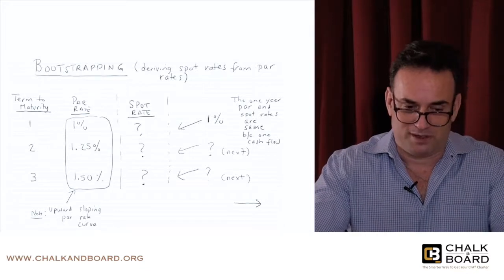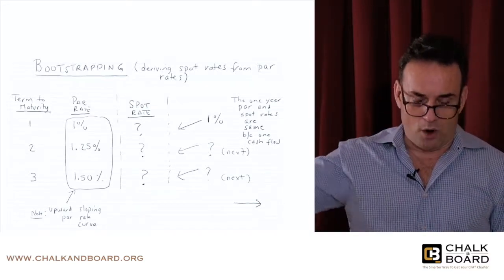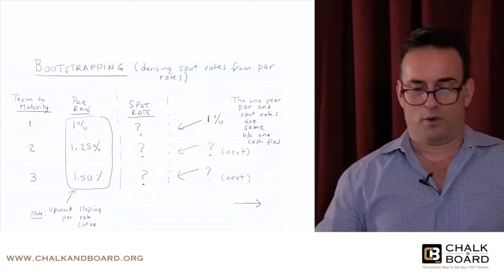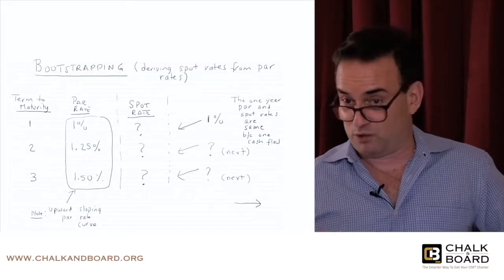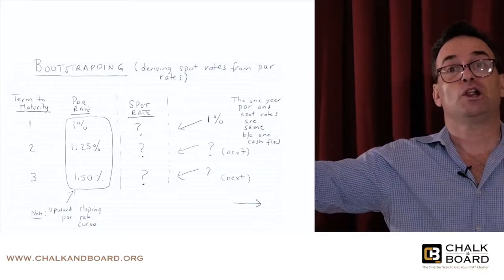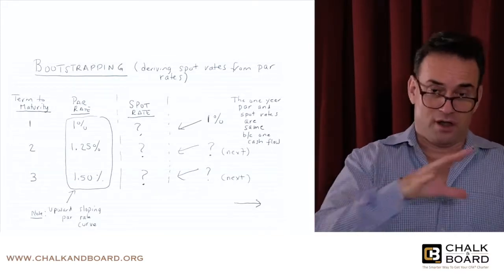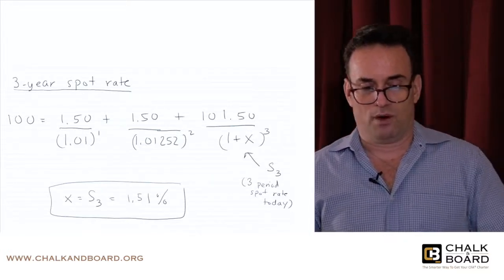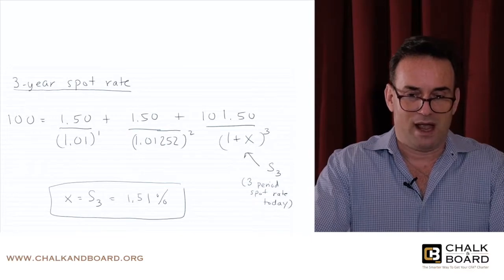For the three-year spot rate: the coupon is 1.5%, paid annually. The cash flows are 1.5 in year one, 1.5 in year two, and 101.5 in year three — the final coupon plus principal return. The first cash flow is discounted at the one-period spot rate of 1%, the second at the two-period spot rate of 1.252%, and the third at (1 + X)³, where X is the unknown three-year spot rate, so that the total present value equals par of 100.